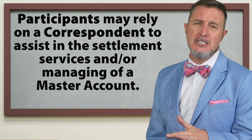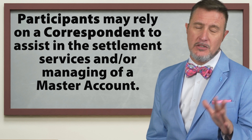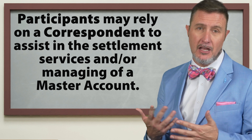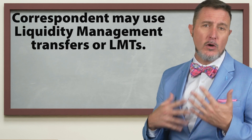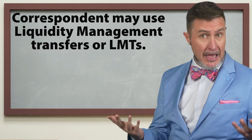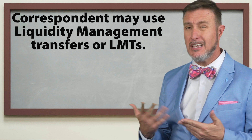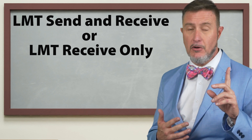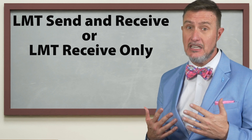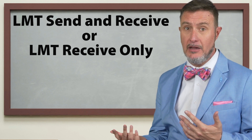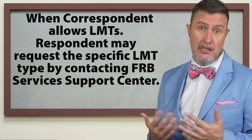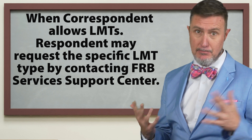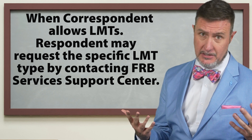That's actually quite normal. For participants who rely on a correspondent — which is basically another financial institution that assists in settlement services or managing a master account — the correspondent may allow them to use liquidity management transfers, or LMTs, and most likely you will. These LMTs can be in the form of an LMT send and receive, or just LMT receive only. If a correspondent allows LMTs, the respondent — that participant — can request the specific LMT type by contacting the FRB Services Support Center.